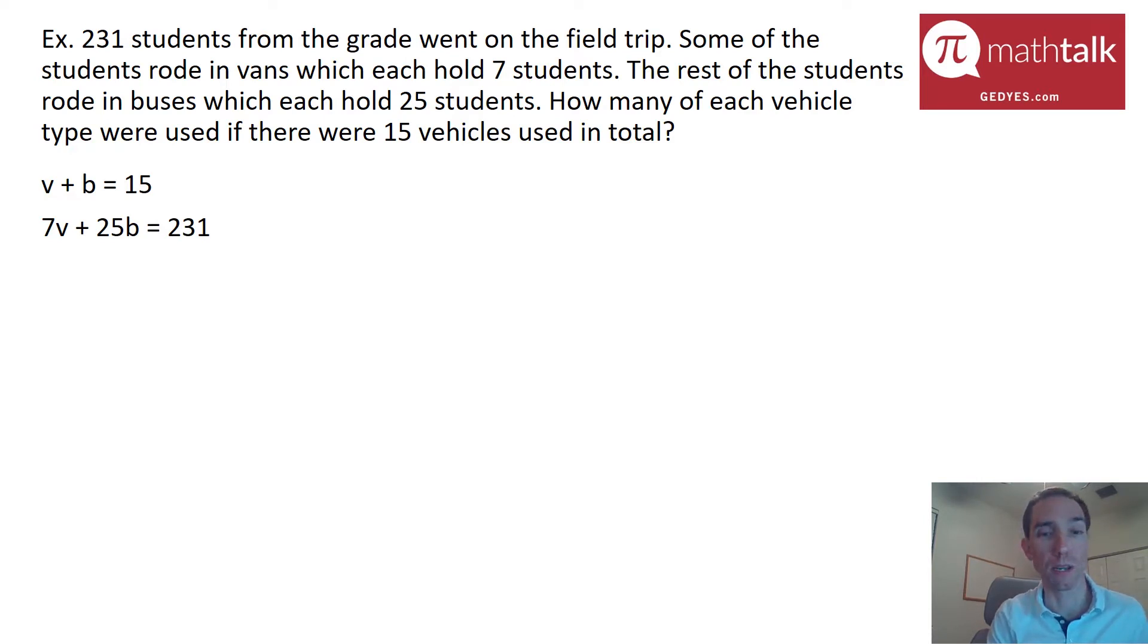So now we have two equations and we want to figure out how many of each vehicle is used. We've got to solve for v and solve for b. Whenever I have problems like this, it's called a system of equations. Typically, what you want to do with systems of equations is you want to find a way to either add or subtract the two equations together in a way that eliminates one of your variables so you can solve for the other one. Once you solve for the one, you can use that information to solve for the other. There's a lot going on here.